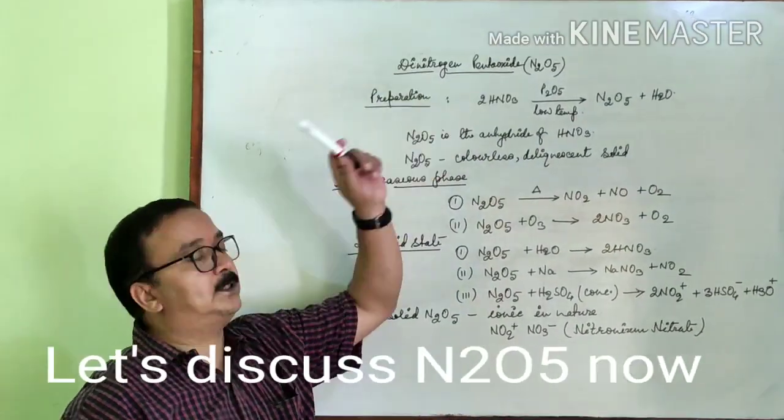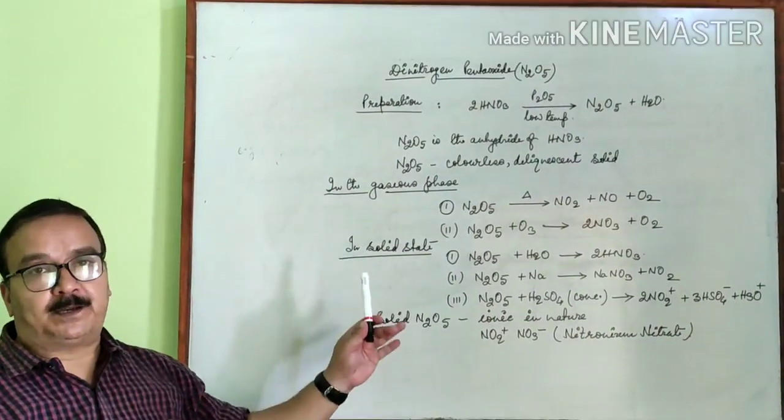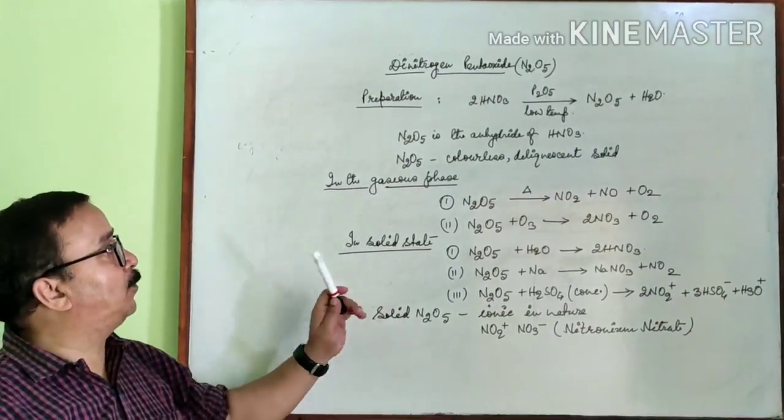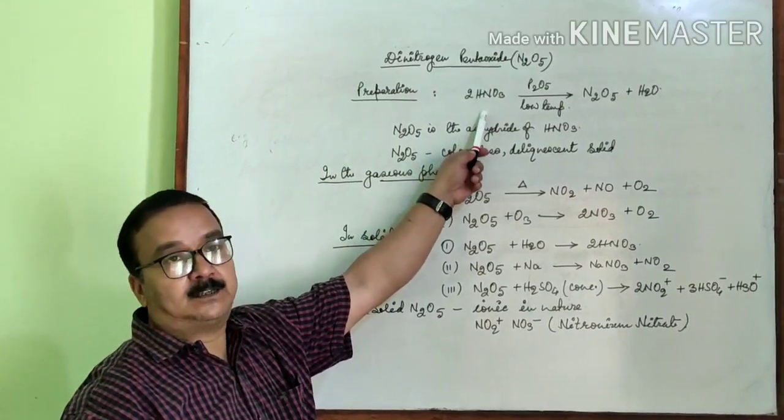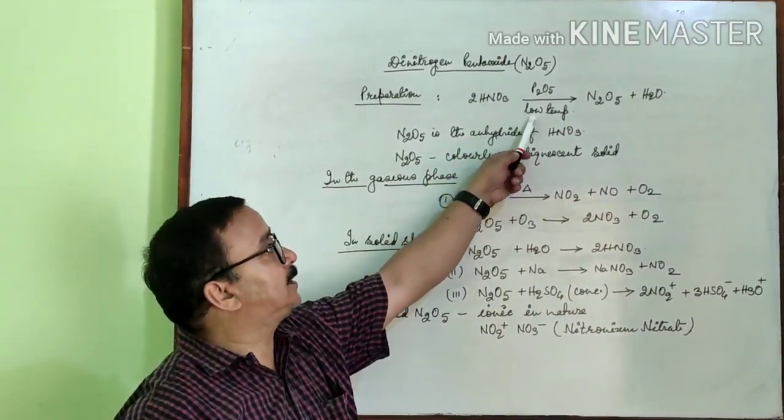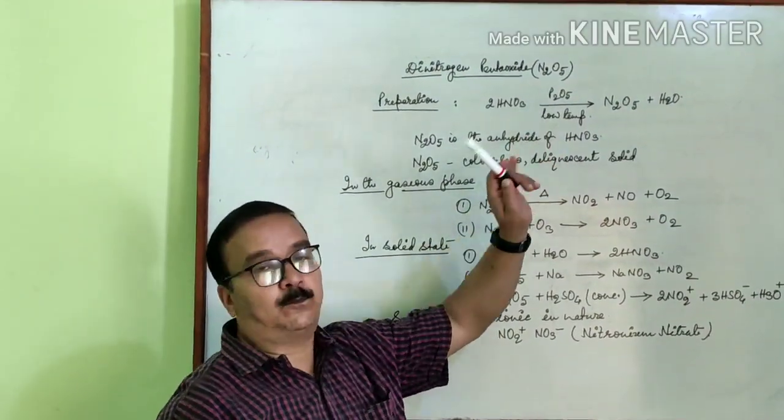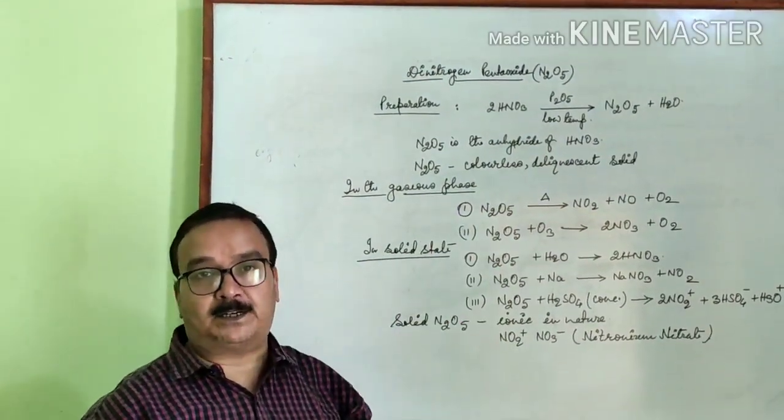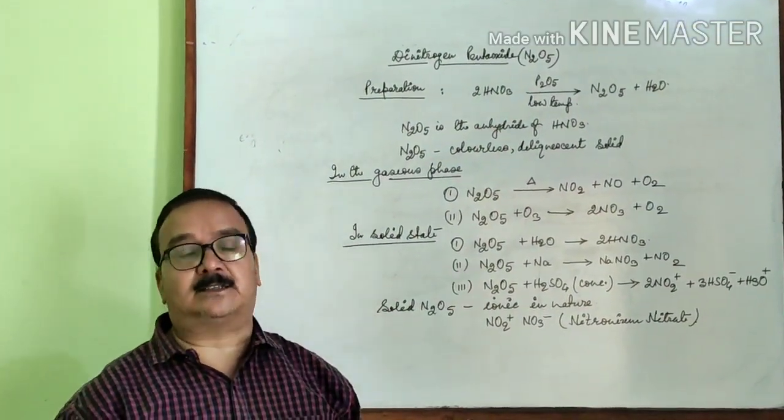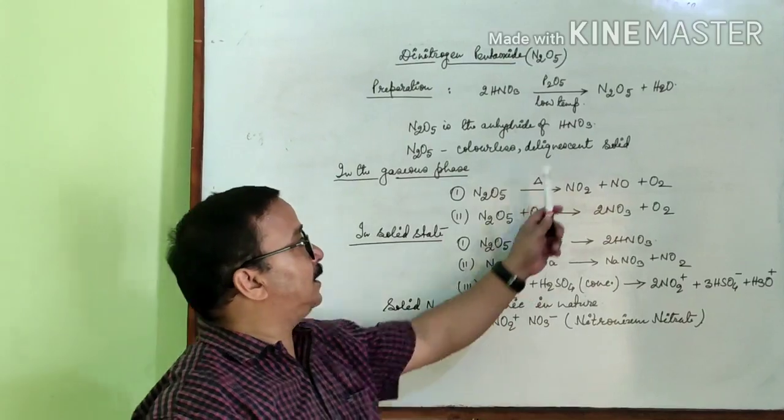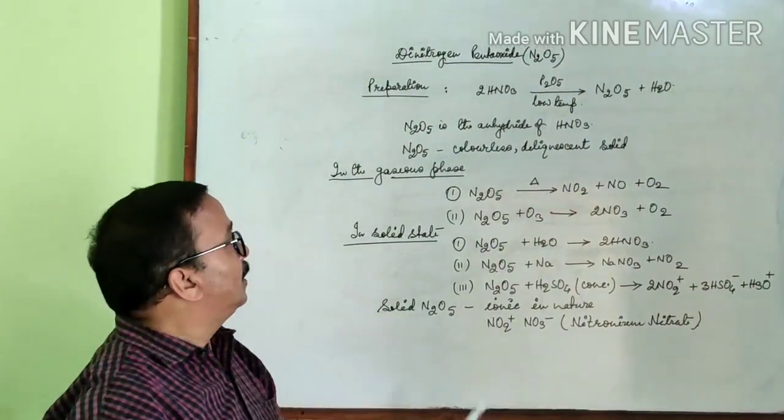Next oxide is dinitrogen pentoxide, N2O5. How can we prepare N2O5? When HNO3, that is nitric acid, is heated at low temperature in presence of P2O5 phosphorus pentoxide, here phosphorus pentoxide acts as a dehydrating agent, then N2O5 is formed and water is removed.